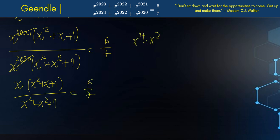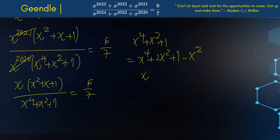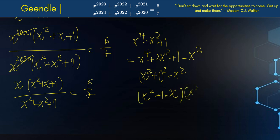Let's try to complete the square on x to the 4 plus x squared plus 1. To make a perfect square we'd need x to the 4 plus 2x squared plus 1, but we only have 1x squared, so we write it as (x squared plus 1) squared minus x squared. This is a difference of two squares, so it factors as (x squared plus 1 minus x) times (x squared plus 1 plus x).